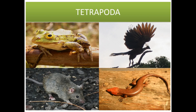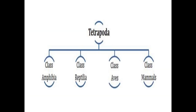Superclass Tetrapoda is again classified into four main classes: class Amphibia, class Reptilia, class Aves, and class Mammalia. We will now see the features of each class in detail.